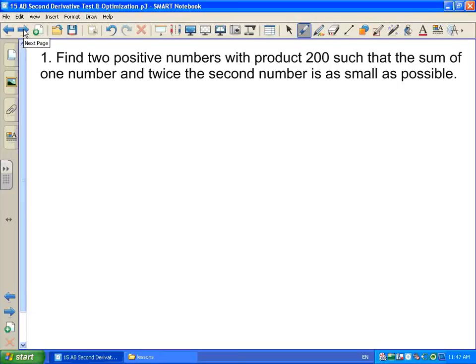Okay, example number one. We want to find two positive numbers with product 200 such that the sum of one number and twice the second number is as small as possible.